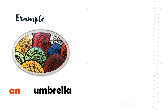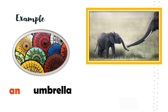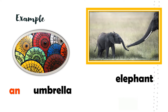Another example: umbrella. We use AN because the first sound of the word umbrella is a vowel letter — it is U. Next, elephant. The word elephant starts with the letter E, so we are going to use AN. The name elephant starts with a sound of E, so we use AN.